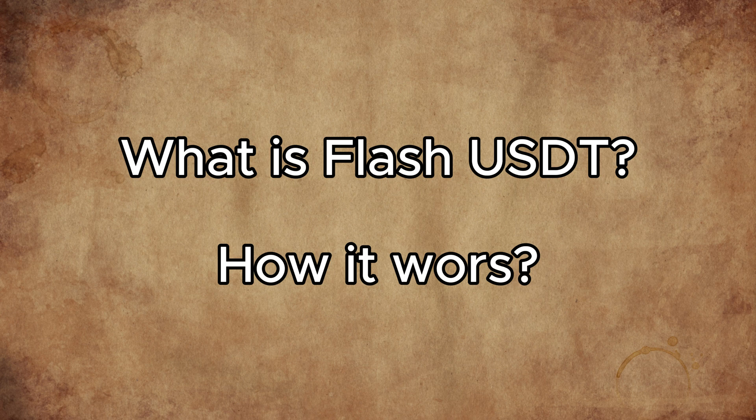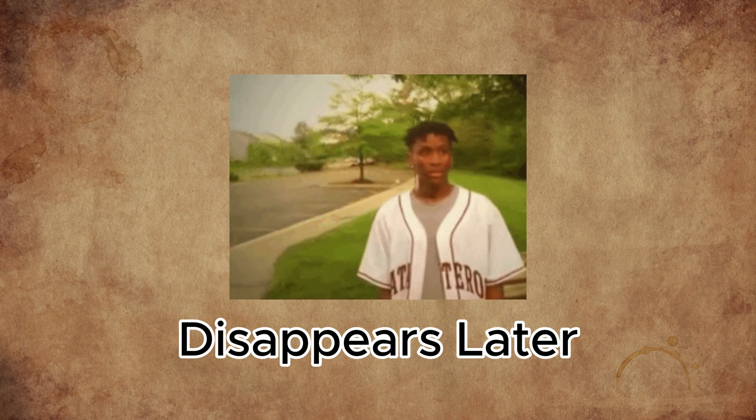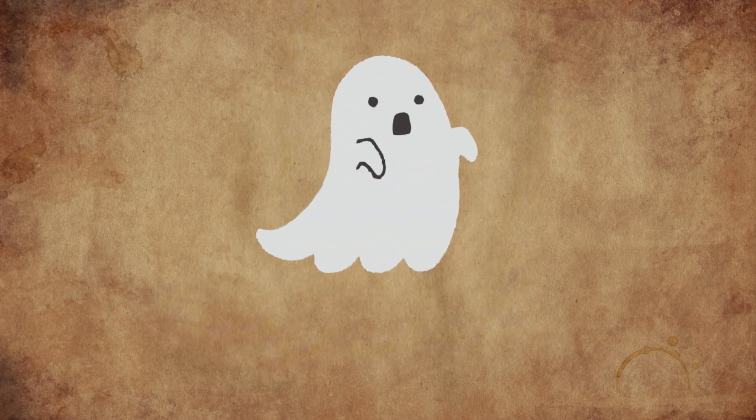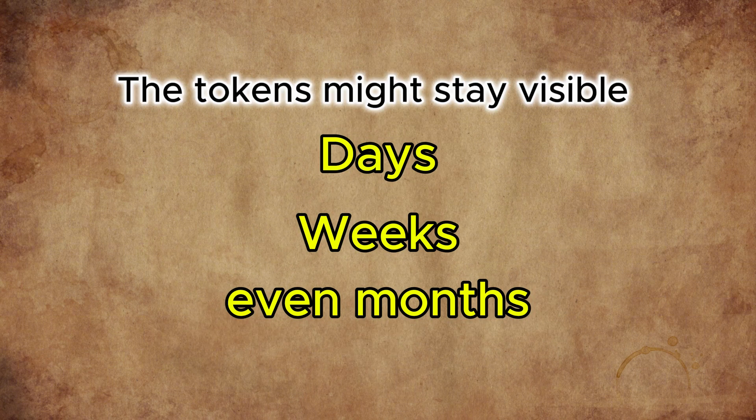Here's how it works. What is Flash USDT? Flash USDT is a temporary transaction that shows up in your wallet but disappears quickly. It's like a ghost deposit that never settles. The tokens might stay visible for days, weeks, or even months, but they're never truly yours.